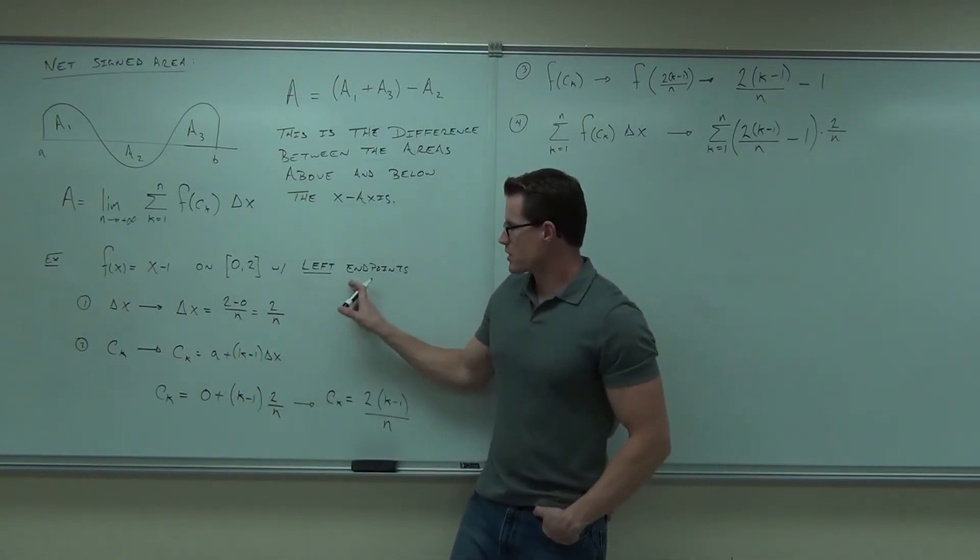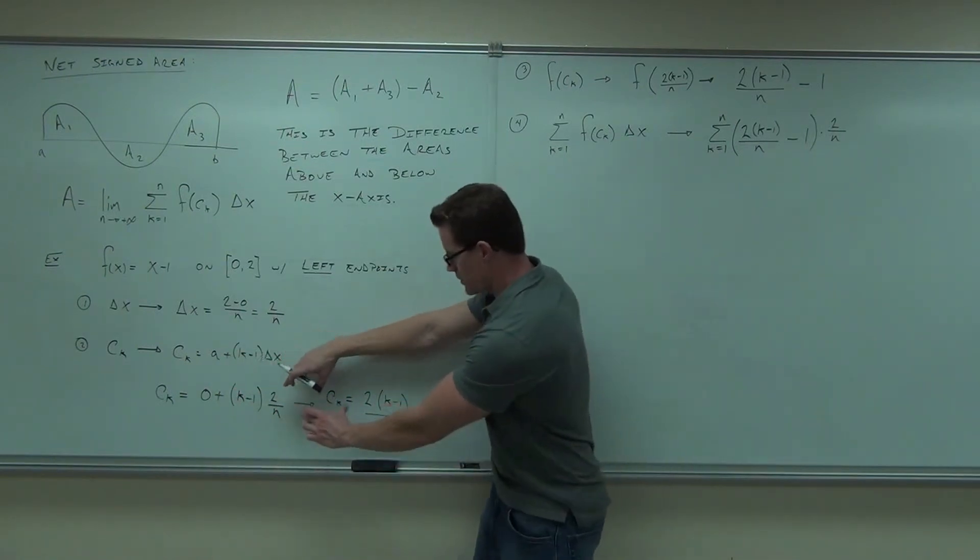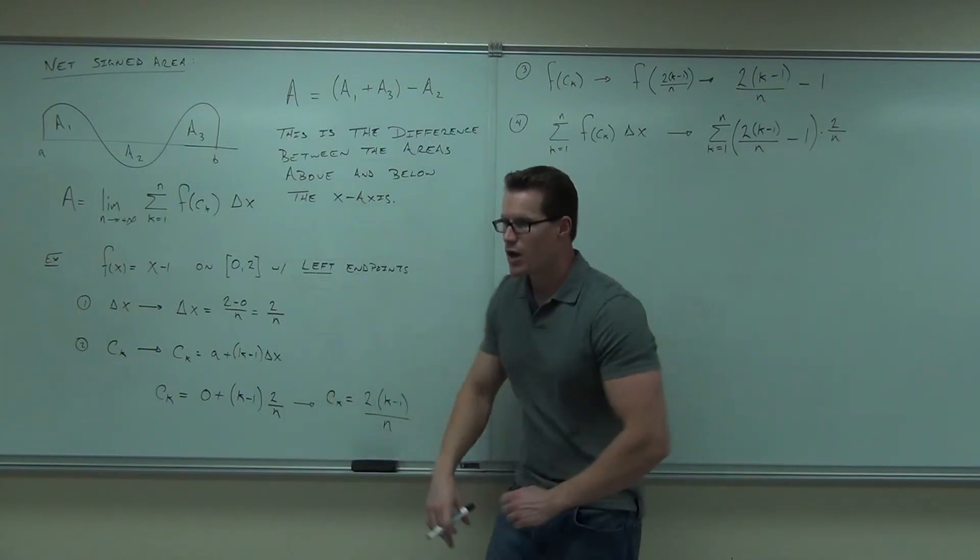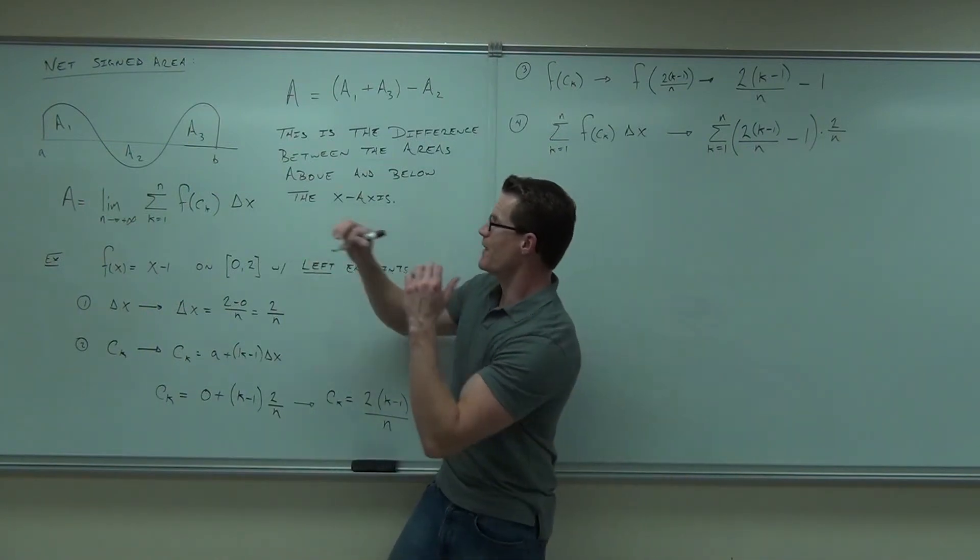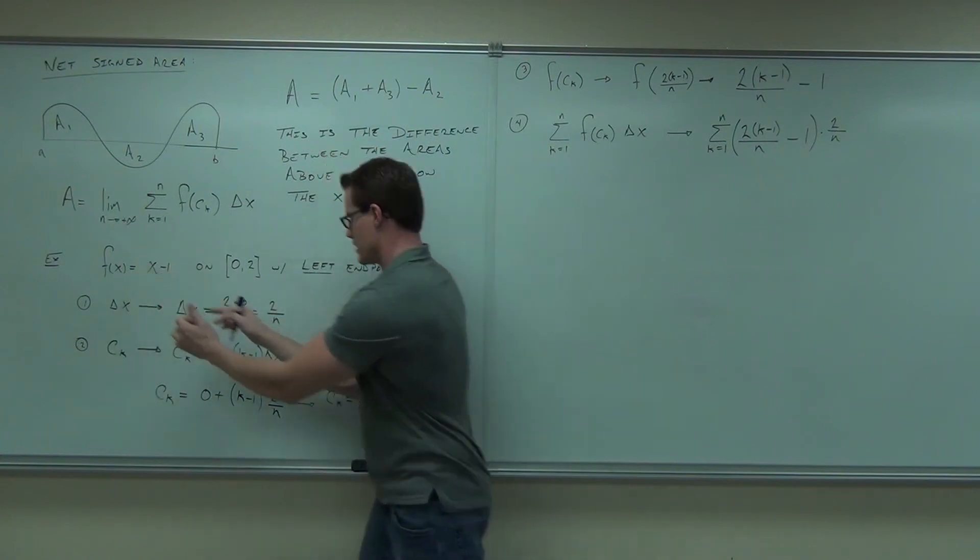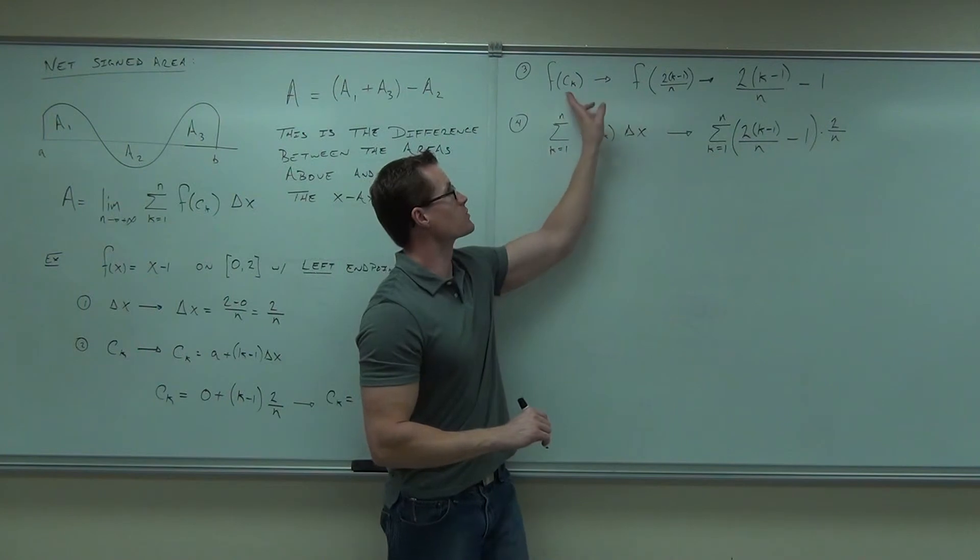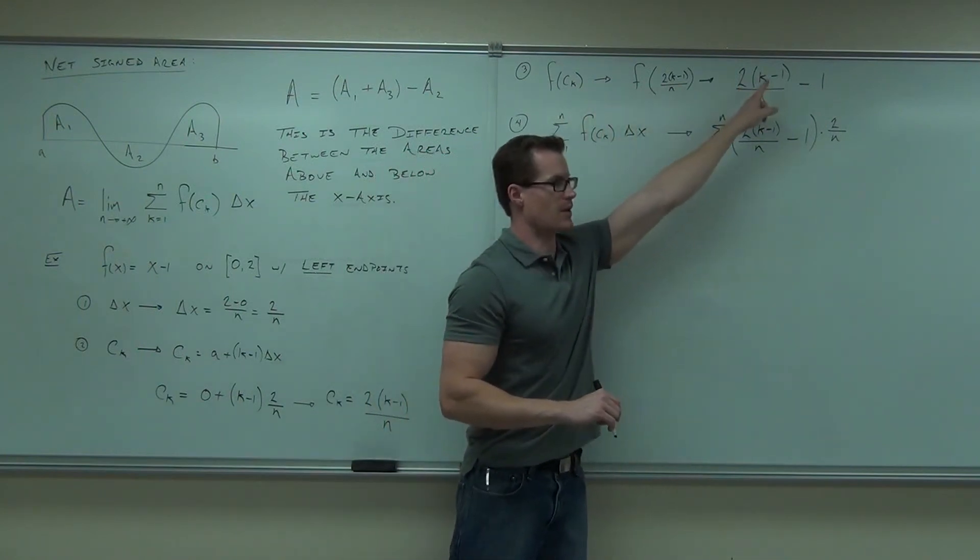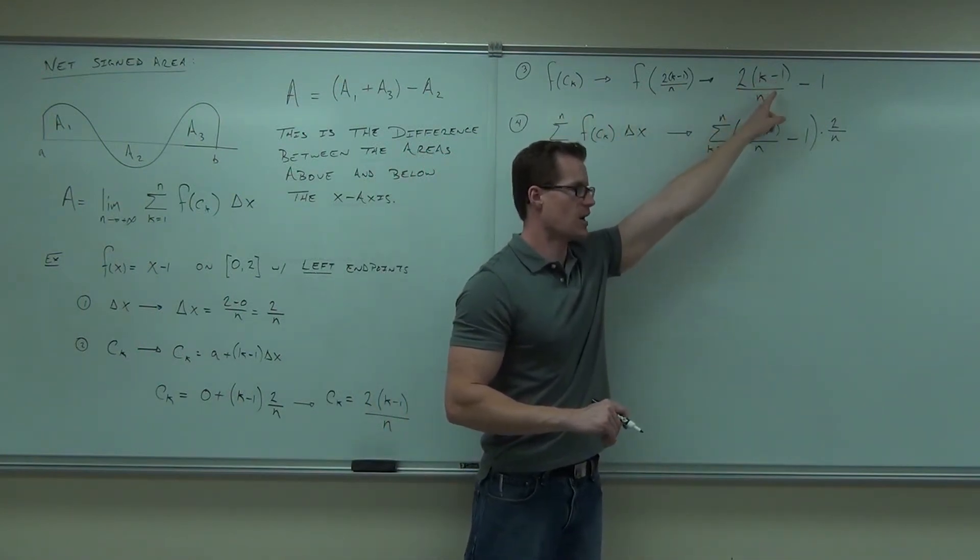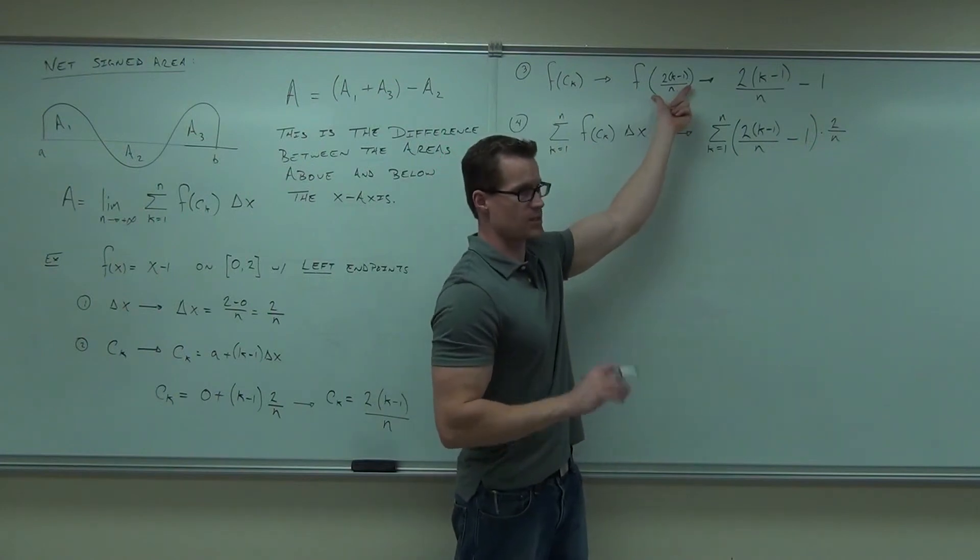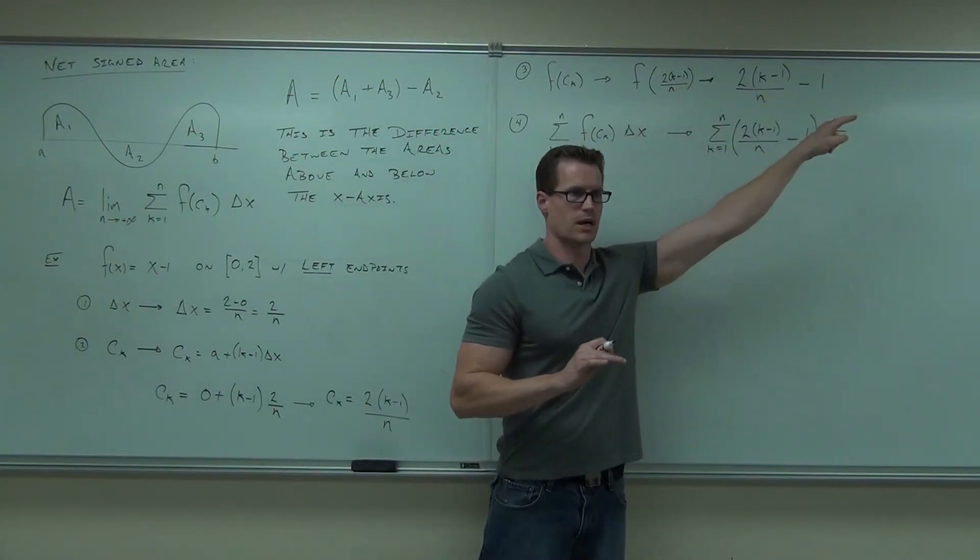We figure that out by inserting our delta x, then we take this value, our c sub k, plug it into our function, that's right here, and we're going to get this minus 1 for our function of c sub k. That's why we have that right there, that's where the minus 1 is coming from, it's not magic, it's because I have x, that's treated as my x, minus 1.